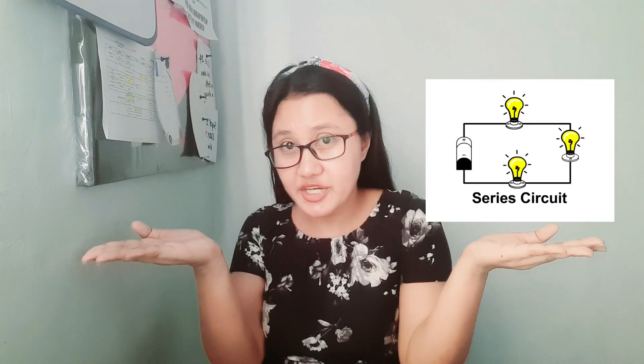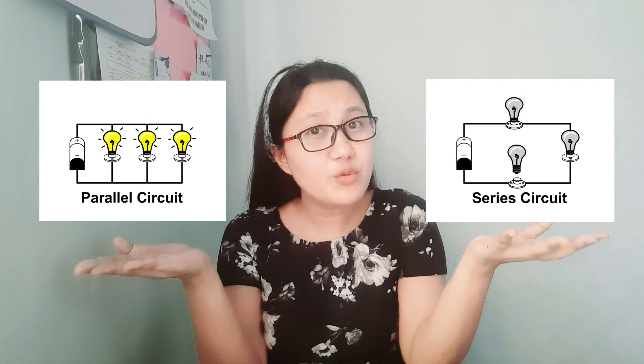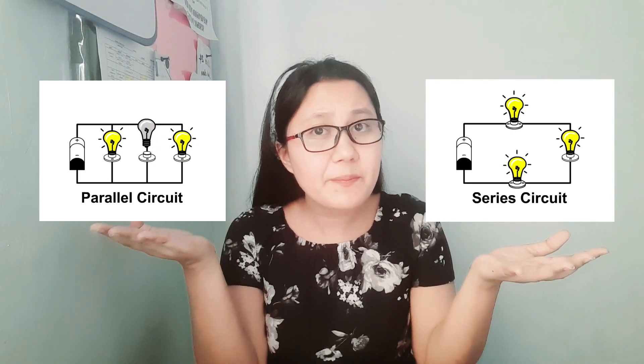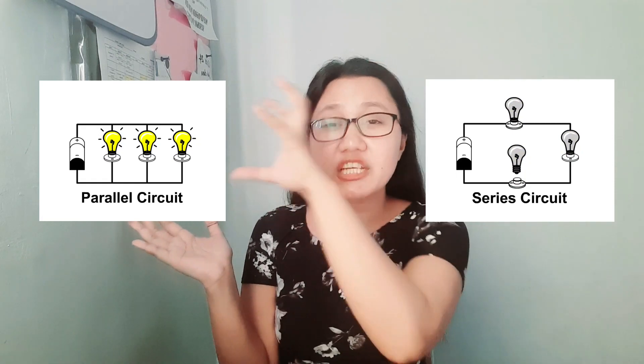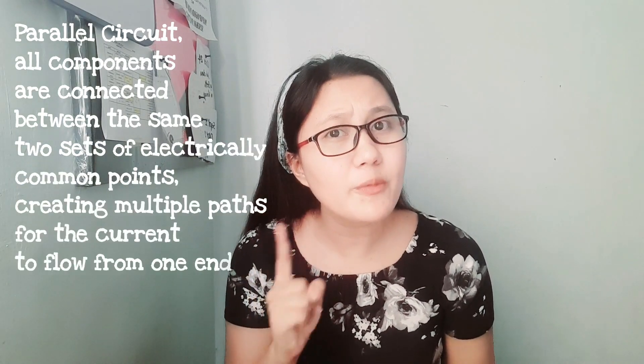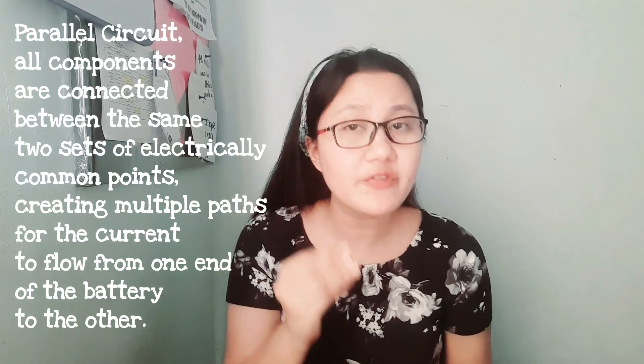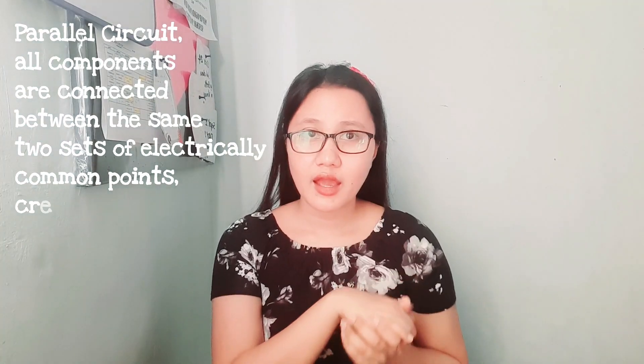Now, how about a parallel circuit? Let us compare series and parallel circuits. In a series circuit, there is only one path since it is a single chain. But in a parallel circuit, you can notice that it has branches. With a simple parallel circuit, the components are connected between the same two sets of electrically common points, creating multiple paths for the current to flow from one end of the battery to another. Let us discuss the rules for each kind of circuit to better understand their differences.